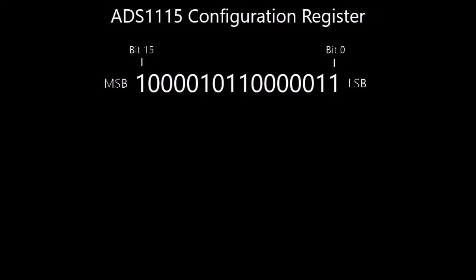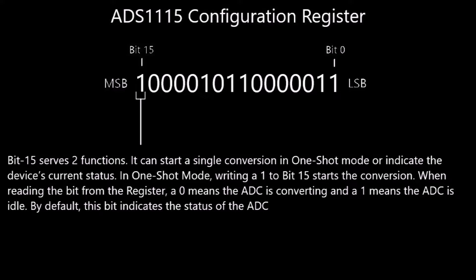Let's take a closer look at the configuration register, which reveals the default configuration of the analog-to-digital converter. There are nine options that can be used to instruct the ADC's function. Bit 15 serves two functions: it can start a single conversion or indicate the device's current status. If the ADC is in one-shot mode, writing a 1 to bit 15 starts the conversion. If you are reading the bit from the register, a 0 means the ADC is converting and a 1 means the ADC is idle. By default, this bit indicates the status of the ADC.